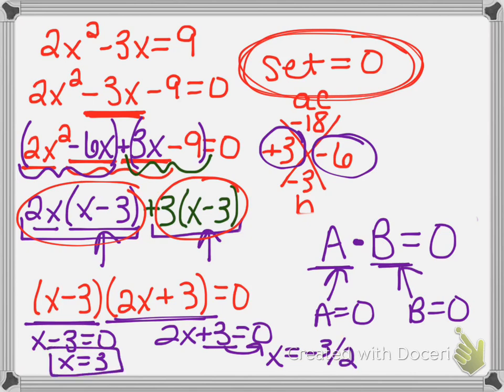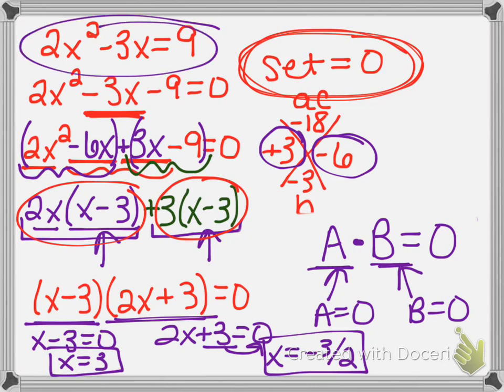So there are my two solutions to this quadratic. That's exactly what question number 1 on the quiz asked you to do. You could have used the swing method or another factoring method, but the process is: set equal to zero, factor, then solve each factor.